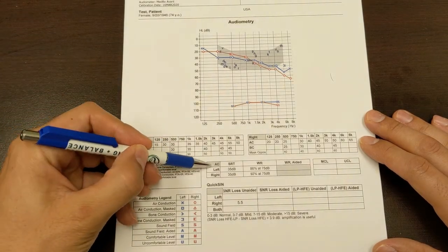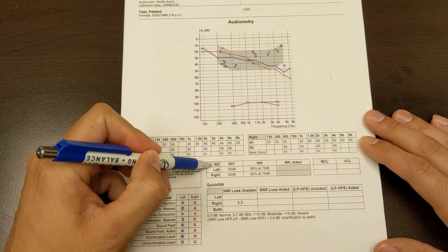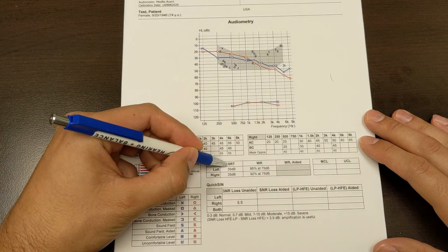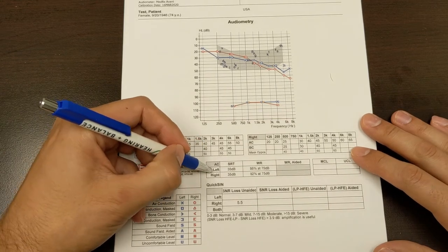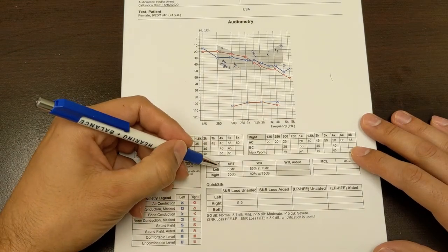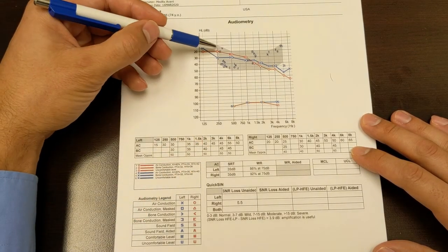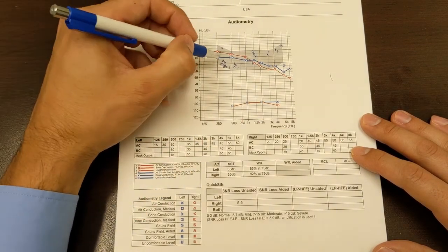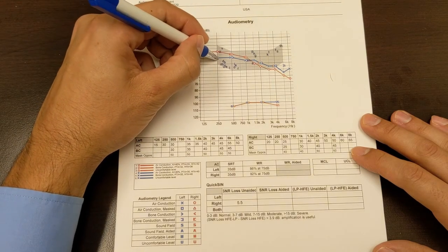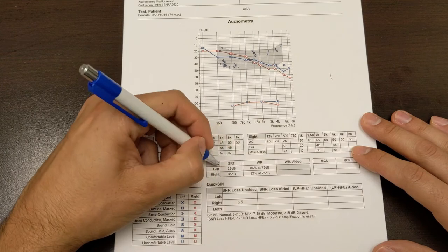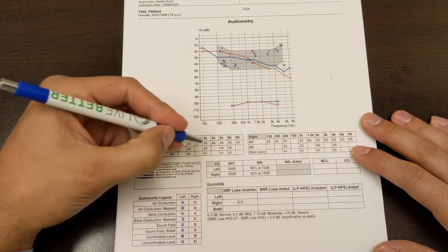So you can see air conduction responses is how we tested speech reception threshold, SRT. So in the left ear and the right ear. And the purpose of this test is to see what's the softest volume you can have played to you in order to make out a word about 50% of the time. And for these tests, there are specific word lists that we use.